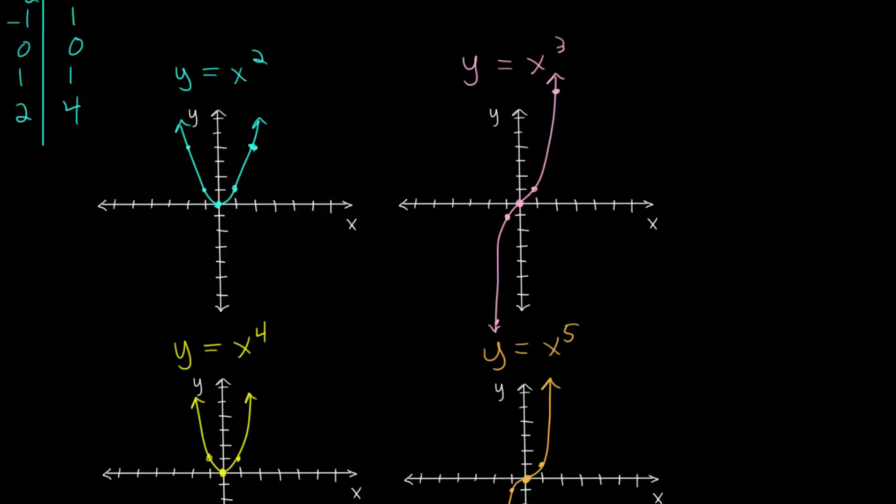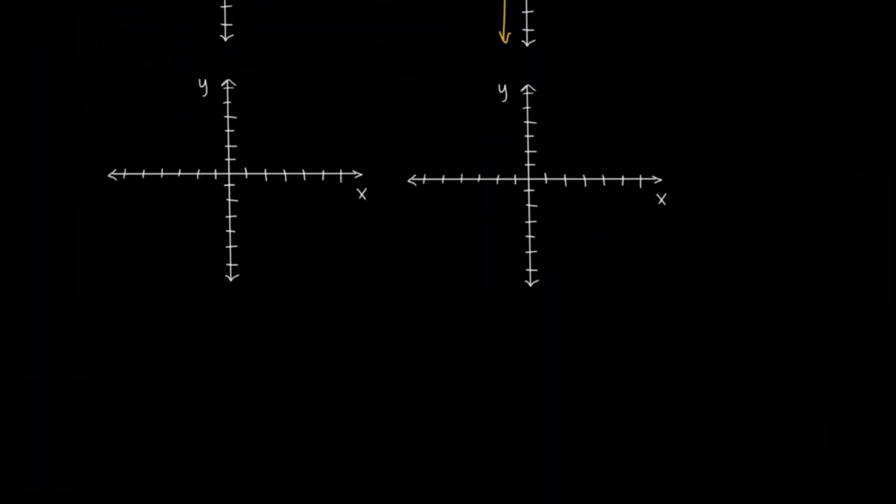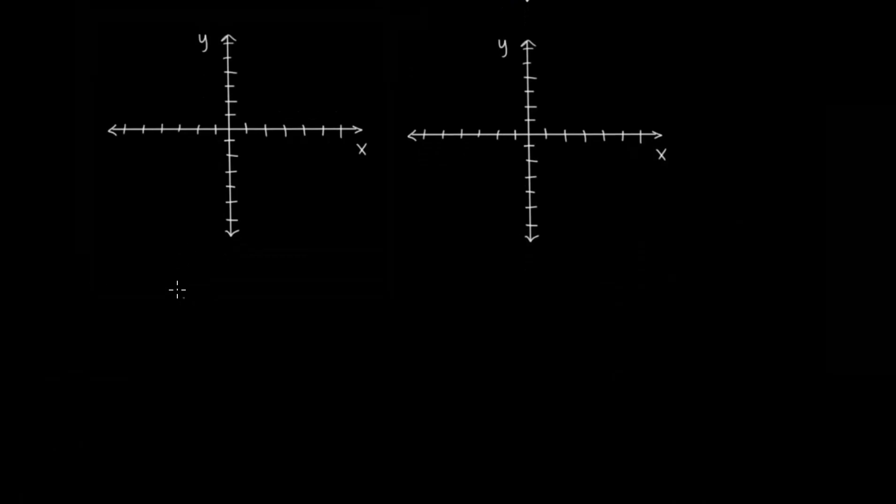So we can make a generalization that when you have y equals x to some even power, that it's going to look like the parabola. And so I'll just draw a very rough shape here. So that will look like a parabola, and the higher the power, the steeper it will get. And likewise, when we have y equals x to some odd power, it's going to look pretty much like a cubic, except the higher the power there, the steeper it will get. So this again is a very rough picture, but you'll get the general idea.